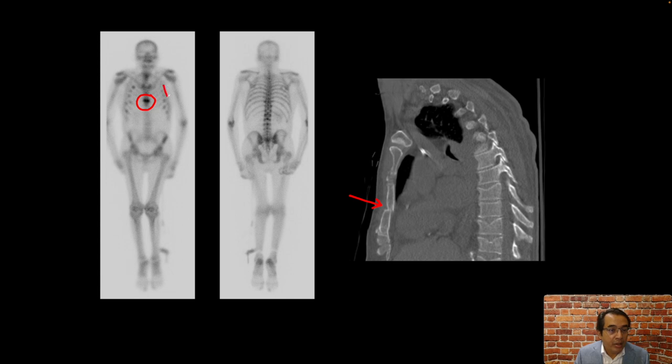Also, we find that there are several other foci of increased uptakes symmetrically on the anterior view, and these are at the junction of the rib and costal cartilage, suggesting prior trauma.